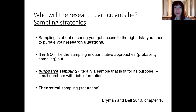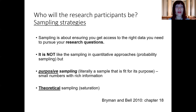So sampling — the definition of sampling is that you try to have data which can answer your research question. We try to make sure that we have a sample, and participants, which help us to answer our research question.